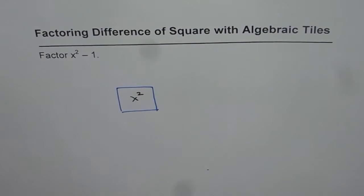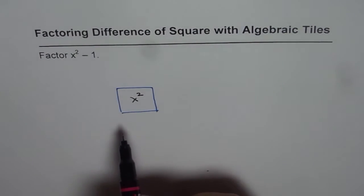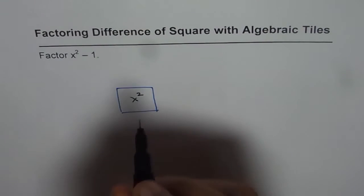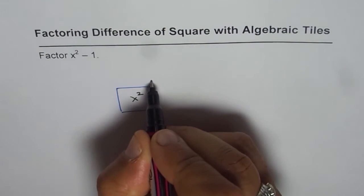Now whenever we are trying to factor in perfect square, you will find that the unit tiles are diagonally placed with the square tiles. So minus 1 will be placed diagonally to our x square tile. So I will place it here.